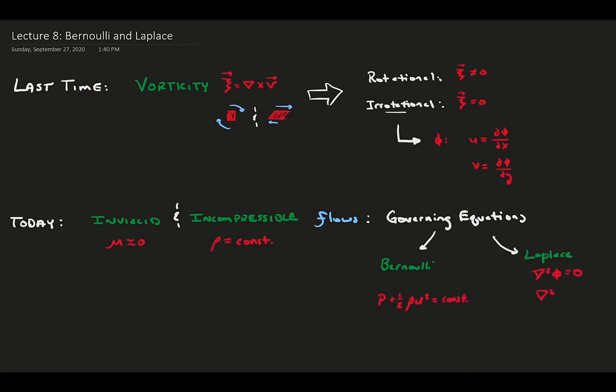Let's begin. Inviscid, meaning the viscosity is approximately zero, and incompressible, meaning the density is constant, flows are also sometimes referred to as ideal or perfect fluids.